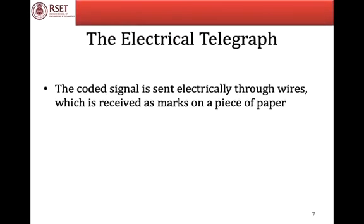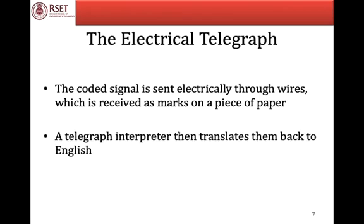The coded signal is sent electrically through wires, which is received as marks on a piece of paper. A telegraph interpreter then translates them back to English. So if the translator is not good enough, imagine what might happen — the message may turn to something else altogether.